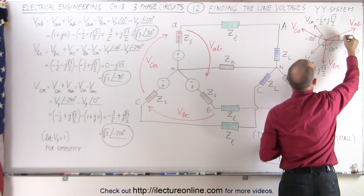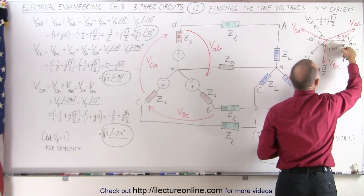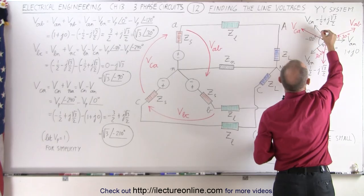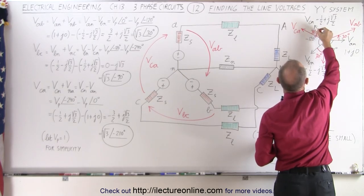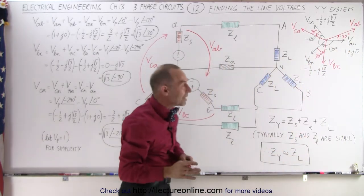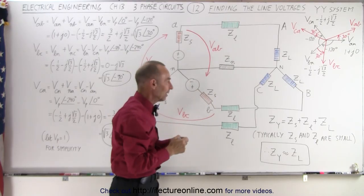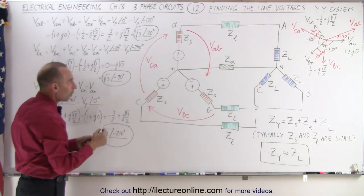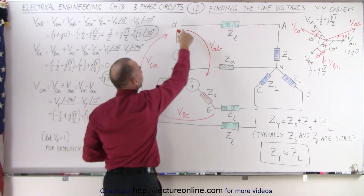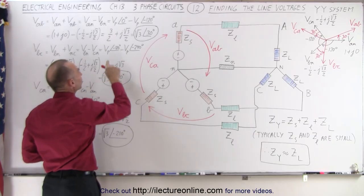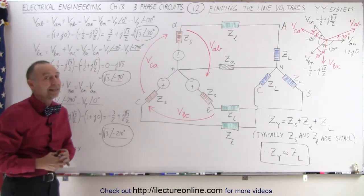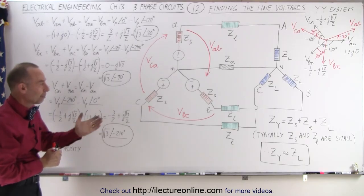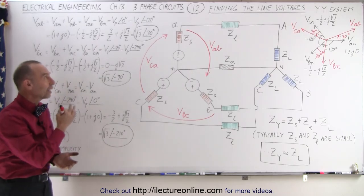Notice that voltage V_AB has a 30 degree phase angle ahead of voltage V_AN. Voltage V_BC has a 30 degree phase angle ahead of V_BN. And voltage V_CA has a 30 degree phase angle ahead of voltage V_CN. The magnitude of each is the square root of three times the magnitude of V_AN, V_BN, and V_CN respectively. So the line voltage is the square root of three times the phase voltage at these various angles. If we add up all those voltages, they will add up to zero if the system is perfectly balanced. That is how we find the line voltages of a Y-Y system.